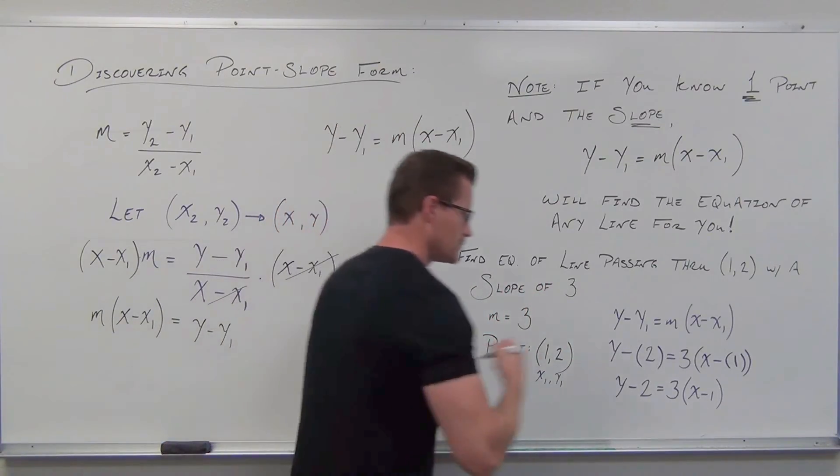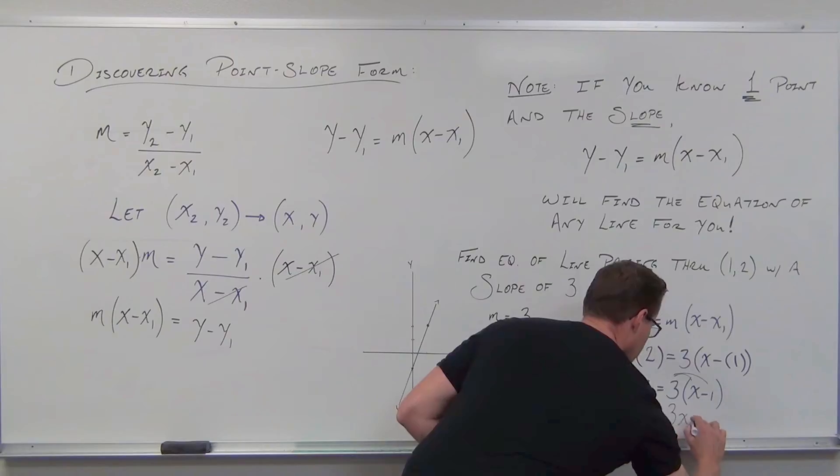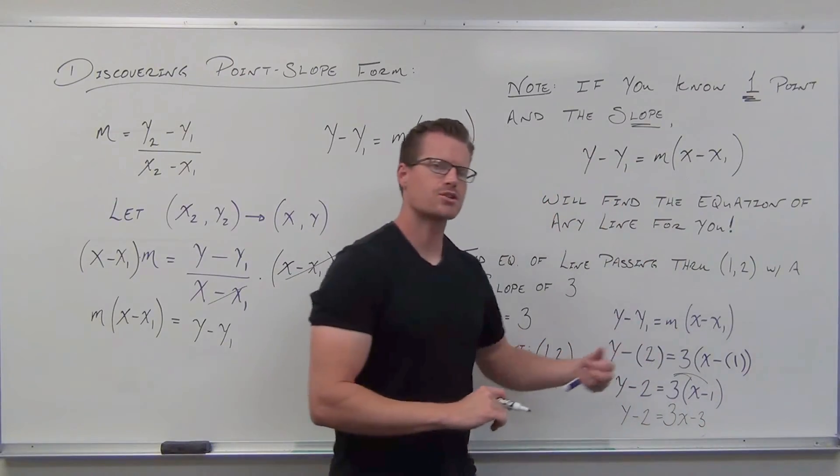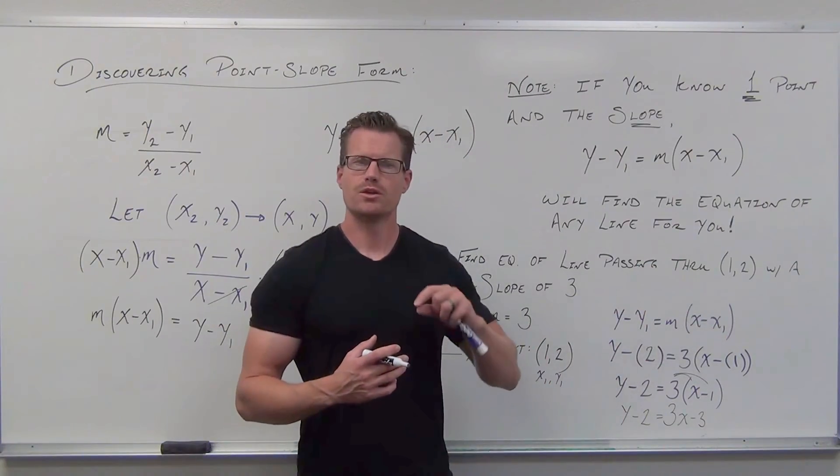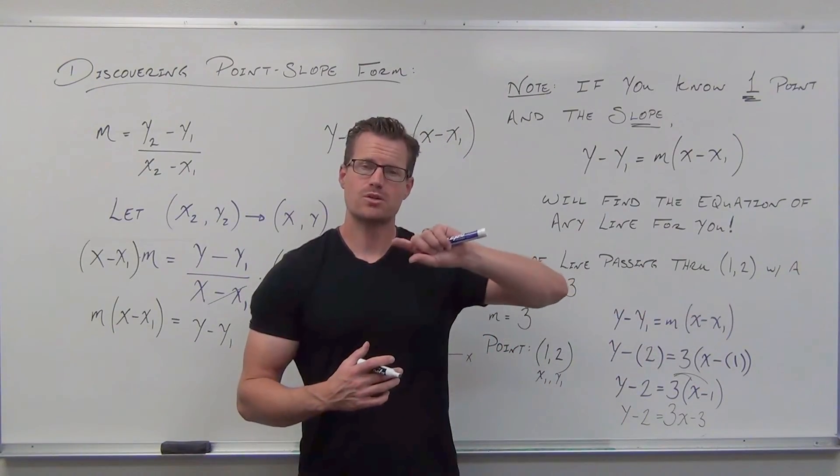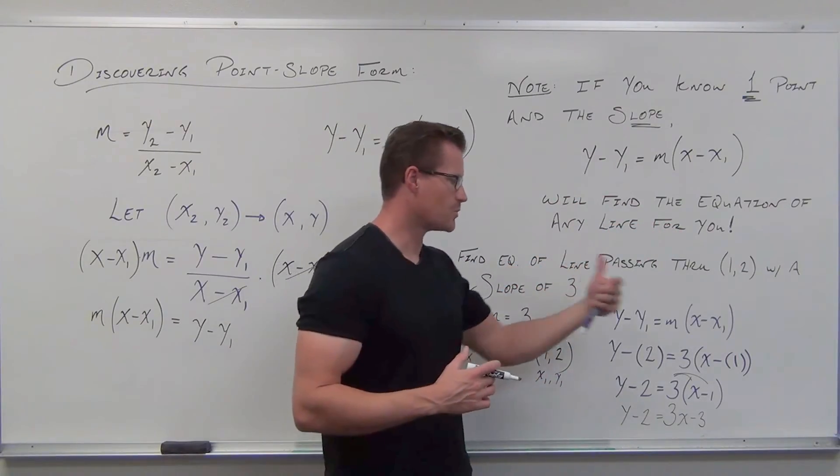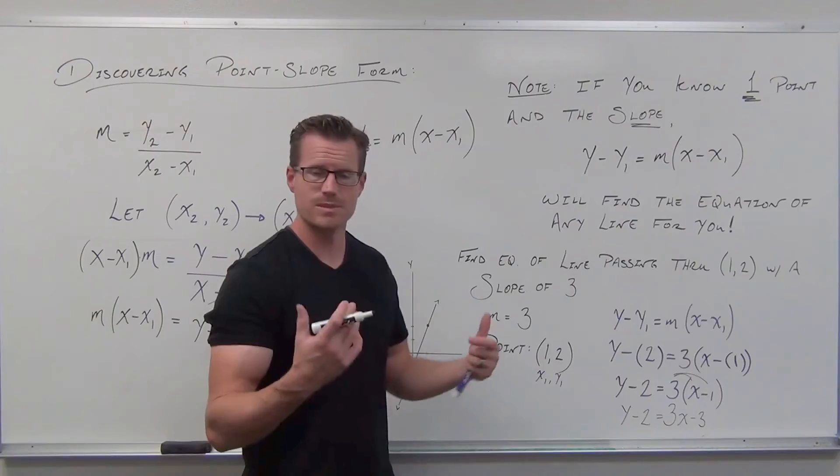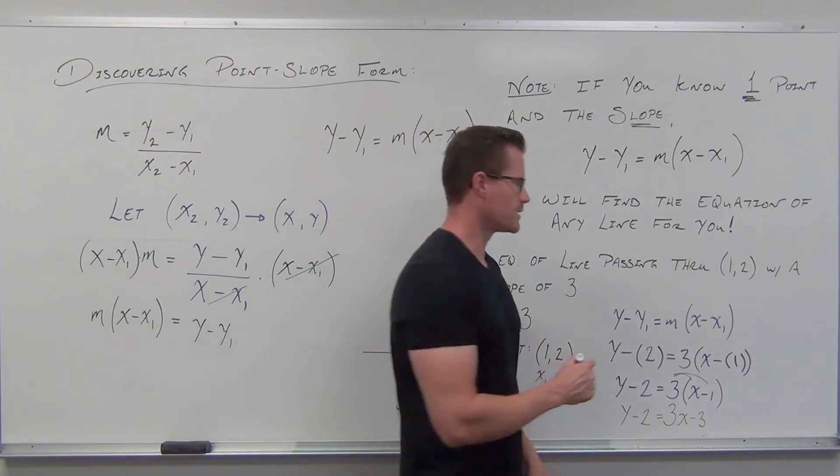If we distribute the three, by the way, make sure you're actually distributing it. When you go fast, like on your homework or a test, and you go, oh, 3x minus 1, you're cheating yourself. You want to make sure that 3 goes to all the terms inside there. Make sure you're multiplying the 3 times the 1. It's an easy mistake to make. And lastly, all we've got to do is add 2 to both sides.